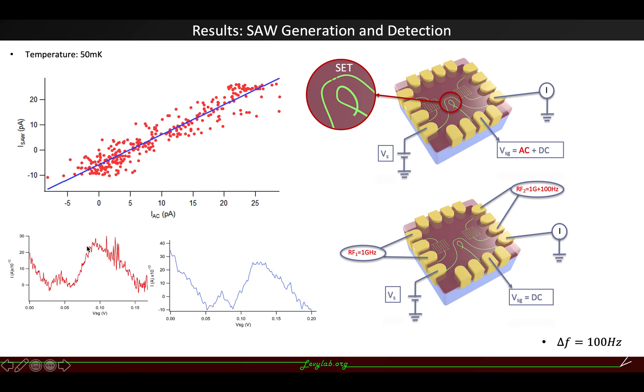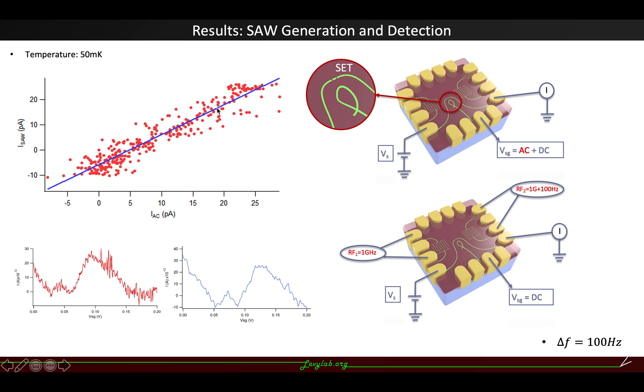If we plot these two data together, we can see a linear trend between them. We believe this shows that surface acoustic wave is tuning the single electron transistor's chemical potential, acting like an AC side gate voltage.